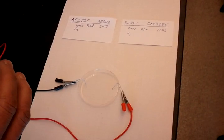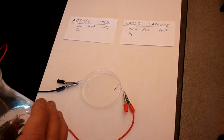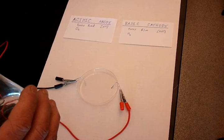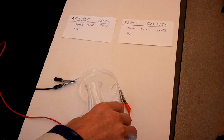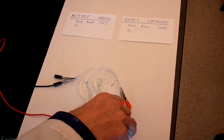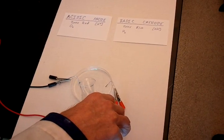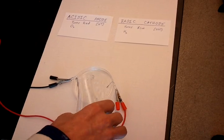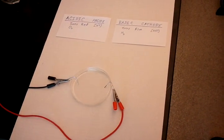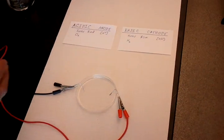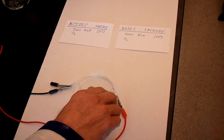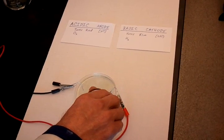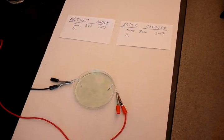We are going to demonstrate an acid-base reaction as well as an electrolytic reaction. I am pouring a solution of sodium chloride into the petri dish. I am going to put the universal indicator solution into this sodium chloride solution and it turns a greenish color.